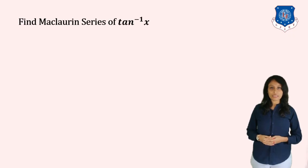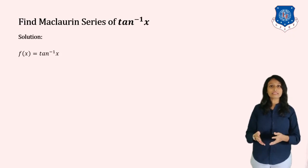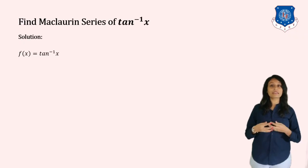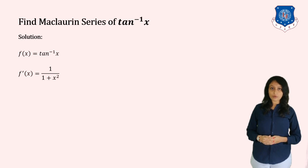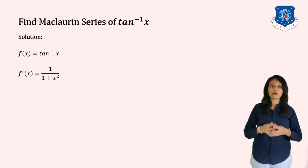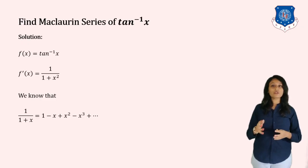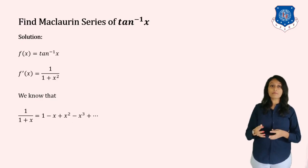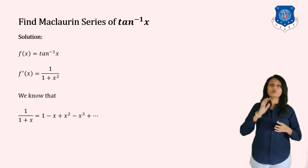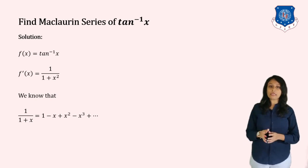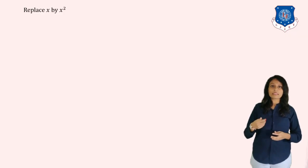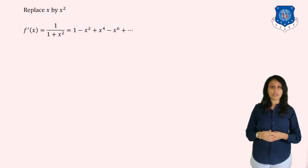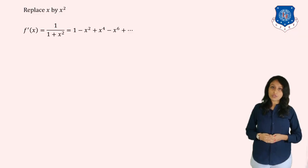Now find the Maclaurin series of tan⁻¹x. We have f(x) = tan⁻¹x, so f'(x) = 1/(1+x²). Comparing with the known series of 1/(1+x) = 1 − x + x² − x³ + …, we replace x by x² throughout. So 1/(1+x²) = 1 − x² + x⁴ − x⁶ + …